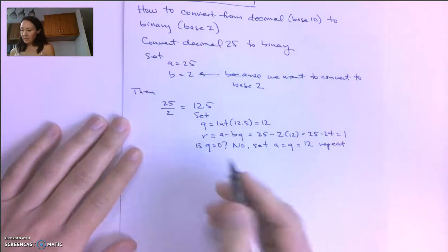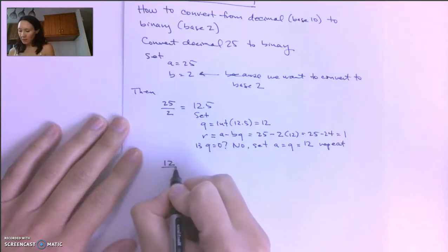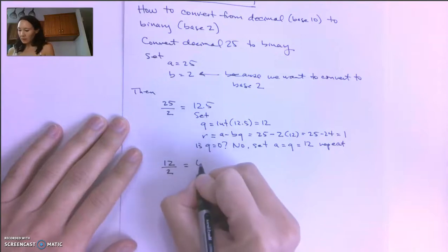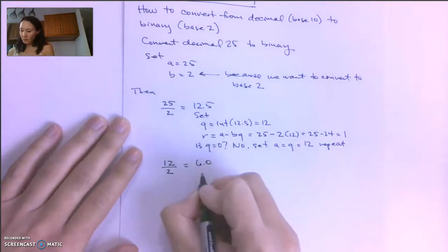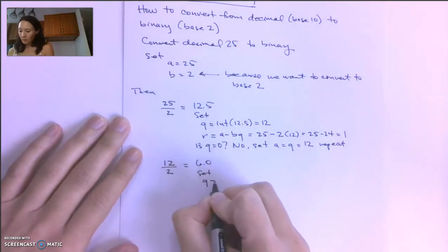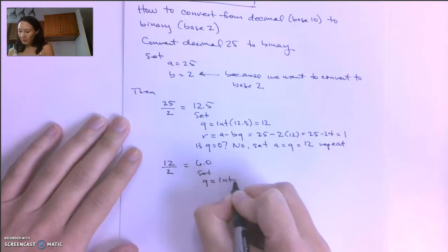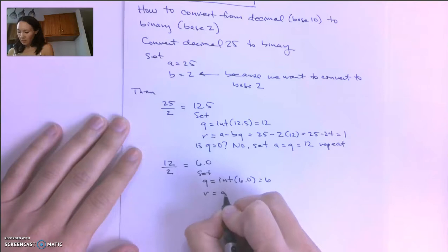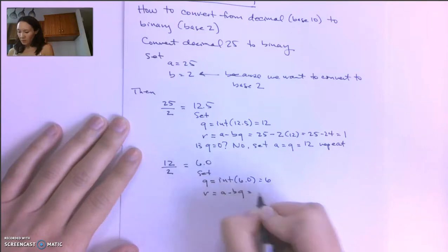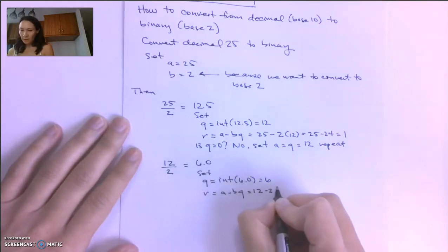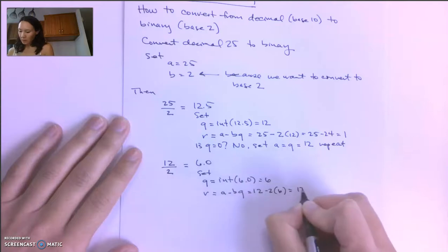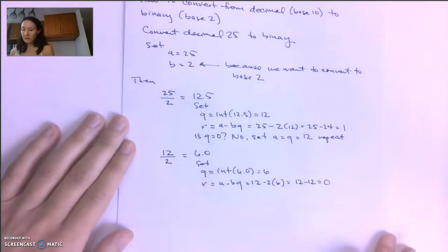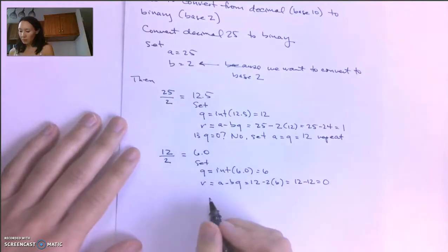So now A is 12. We take 12 and divide by 2. B is not going to change. 12 divided by 2 gives us 6.0. So we set Q equal to the integer part of 6.0, which is just 6. We set R equal to A minus BQ, which is 12 minus 2 times 6, which is 12 minus 12, or 0 — no remainder, which makes sense because we get an even 6 when we divide 12 by 2.